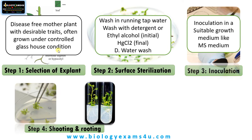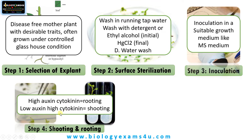The next step is shooting and rooting, which is induced by changing the hormonal compositions or phytohormones. First, the explant divides and forms a callus — an undifferentiated mass of cells. From that, we add different hormonal combinations to induce shooting or rooting. The most common method is the auxin-cytokinin ratio, which works with the majority of plants. High auxin and low cytokinin favors rooting.